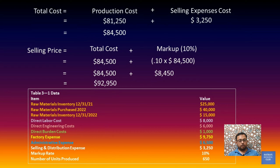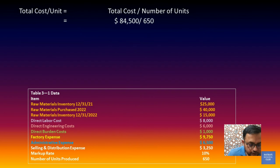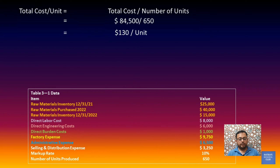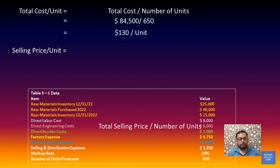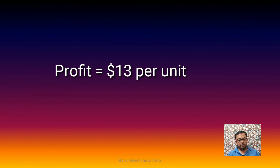Now we calculate per unit figures. Total cost per unit equals total cost divided by number of units: $84,500 divided by 650 units equals $130 per unit. Selling price per unit equals total selling price divided by number of units: $92,950 divided by 650 equals approximately $145 per unit. The difference of approximately $13 per unit represents the profit margin.